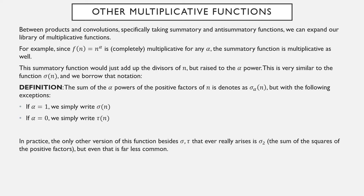In practice, the only other version of this sigma function that actually shows up a lot is σ_2, adding up the squares of the positive factors. I'm not saying adding up other powers of factors couldn't possibly arise — I'm just saying they seem a bit artificial. σ_1, the normal sigma function, pops up. σ_0, the τ function, shows up a lot. σ_2 has arisen from time to time in natural contexts. Other than that, I've never really seen them show up. We can compute their values and assign problems with them, but they're not necessarily useful outside of exercises.